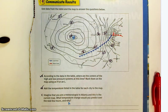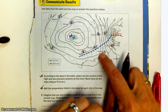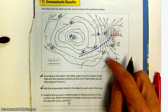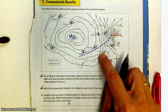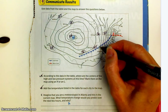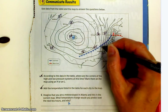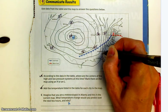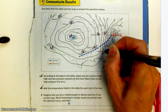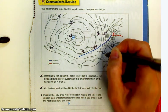Now, let's look at C. It says, imagine that you're a meteorologist in Atlanta. So, Atlanta is right here. And this is the current map. What temperature change would you predict over the next few hours and why? Well, if I live in Atlanta, I predict that my temperature is going to drop because there is a cold front over here. And I can tell by the spikes that it is headed toward Atlanta. So, right now, Atlanta is fairly warm. But when the cold front comes through, the temperature is going to drop.